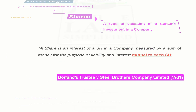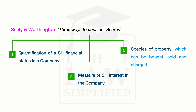Having said that, there is a quite distinctive way that Seeley and Worthington, two prominent academics in the area of company law, have considered shares. On the one hand, they feel it is essentially a quantification of a shareholder's financial status in a company. Apart from that, they also believe it is a measure of the shareholder's interest in the company itself — what interest he or she has. And thirdly, they feel it is also a species of property which can be bought, sold, and or charged upon.